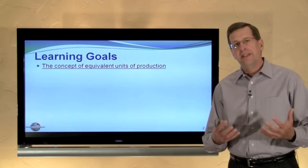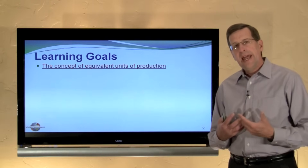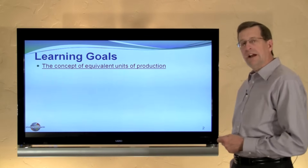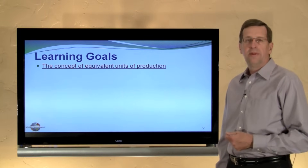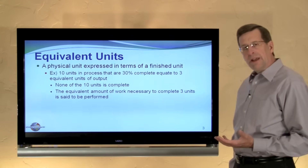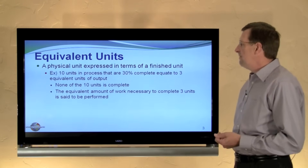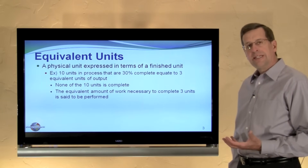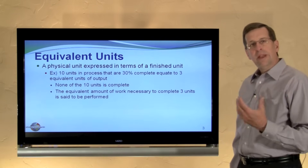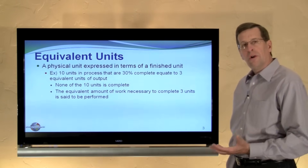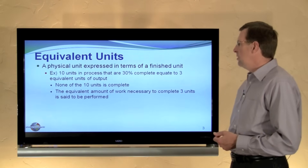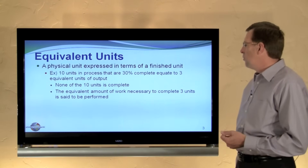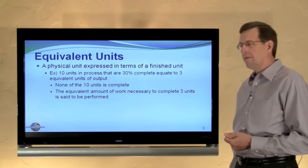In the previous module, we talked about the general characteristics of process costing. Now we're going to get into the nuts and bolts of process costing, and that begins by understanding the concept of equivalent units and how we determine the cost per equivalent unit. An equivalent unit is an abstract concept — it's simply a physical unit expressed in terms of a finished unit. For example, if we have 10 units in process that are 30% complete, that equates to three equivalent units of output — 30% of 10. None of the 10 units is complete; it's simply that the equivalent amount of work necessary to complete three units is said to be performed.